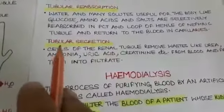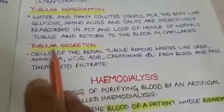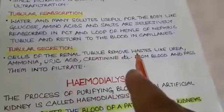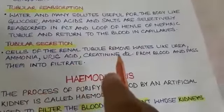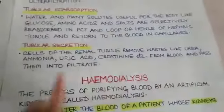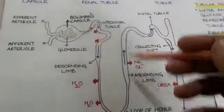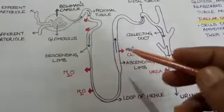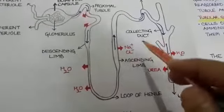The third step in urine formation is tubular secretion. In tubular secretion, cells of the renal tubule remove waste like urea, ammonia, uric acid, and creatinine from the blood and pass them into the filtrate. In this part of the nephric tubule or renal tubule, many harmful nitrogenous wastes like urea, creatinine, and uric acid are removed from the filtrate and added to the urine.